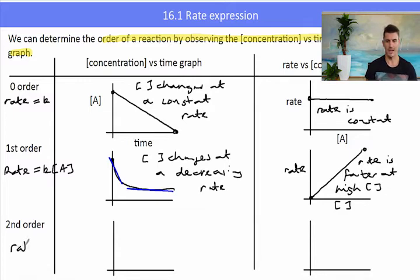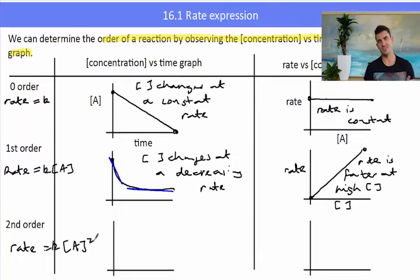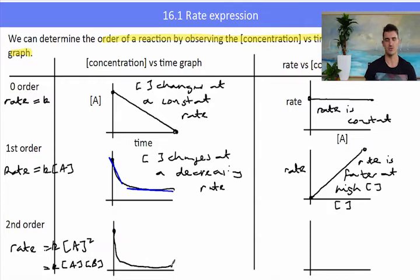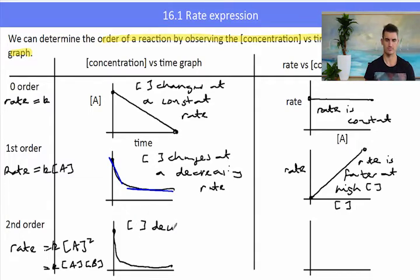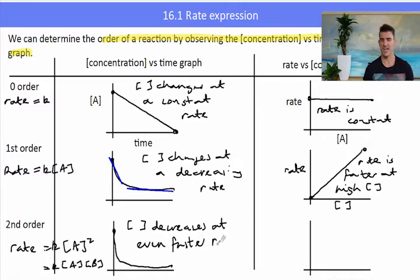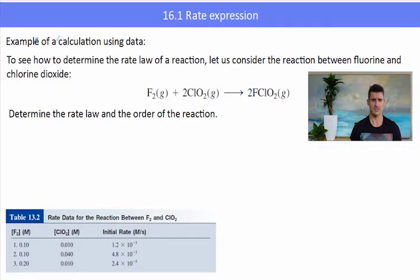For a second order rate equation, the concentration-time graph looks a lot like a first order reaction, however it starts off much steeper. The concentration decreases much more quickly than a first order reaction — an even greater change in concentration per second. The types of rate equations for this would be rate equals kA² or rate equals kAB. The rate-concentration curve is now an exponential — as concentration increases, the rate increases faster and faster.